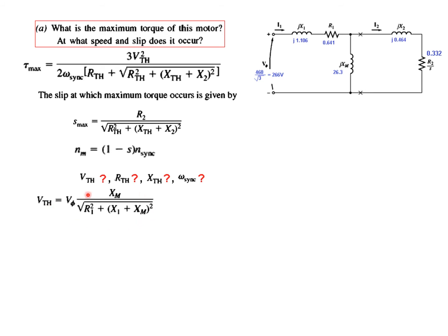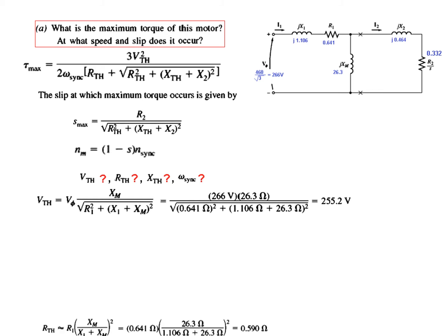This is the formula for V_Thevenin. We'll plug in all the values from the circuit: 266 for the voltage, XM 26.3, and all the other values. Using your scientific calculator, you can get the answer: 255.2 volts. The formula for R_Thevenin—we just plug in the values—gives us 0.590 ohms.